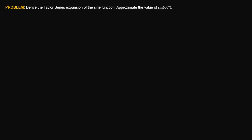Next problem. Derive the Taylor series expansion of the sine function and then approximate the value of sine 60 degrees. So let's go to the solution. The function that we are trying to estimate or approximate is the sine of a certain value — sine of x — so that at any value of x, we can approximate the value of the sine function using the Taylor series expression.